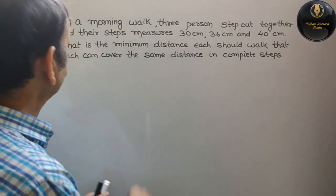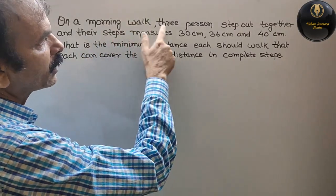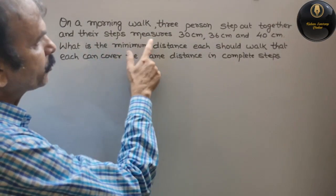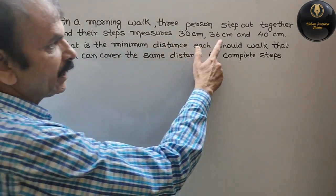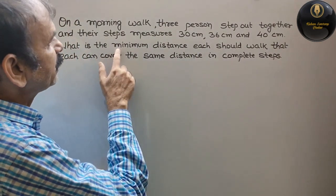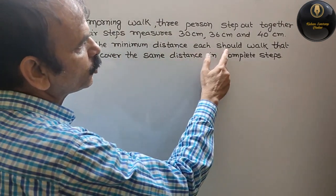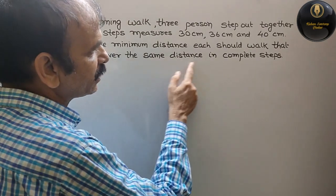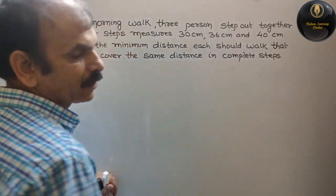Our question is, on a morning walk, three persons step out together and their steps measure 30 cm, 36 cm, 40 cm. What is the minimum distance each should walk that each can cover the same distance in complete steps?